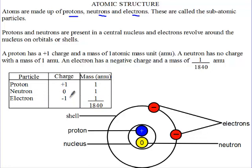An electron has a charge of minus 1 and a mass of 1 over 1,840 atomic mass units. You can see that the mass of an electron is very, very small.